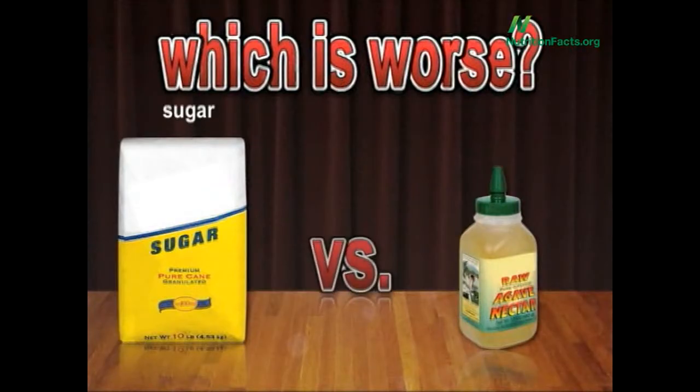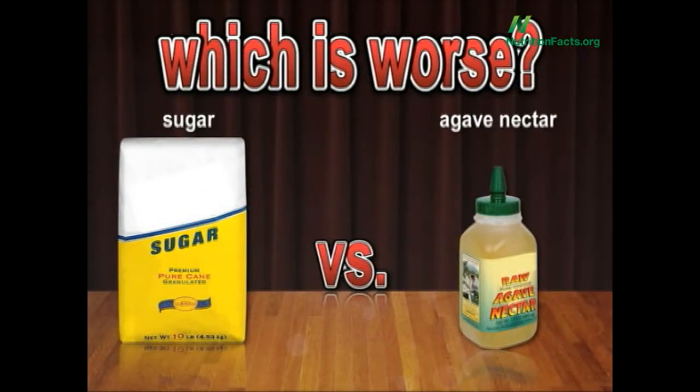Should we start with an easy one to launch us off? Table sugar versus raw, pure, organic agave nectar. Which is worse? Does sugar have less nutrition? Or does agave nectar have less nutrition? Or do they both have the same?